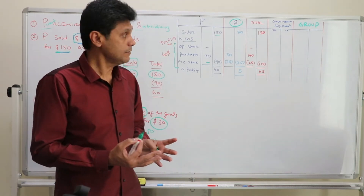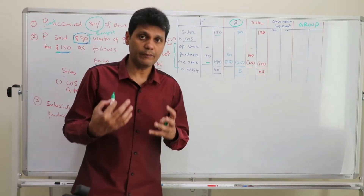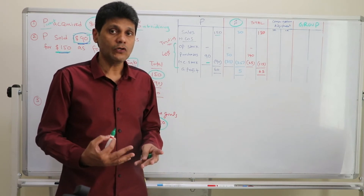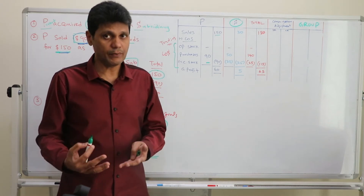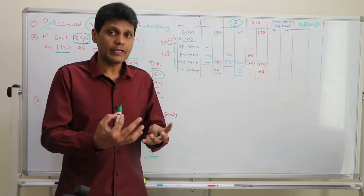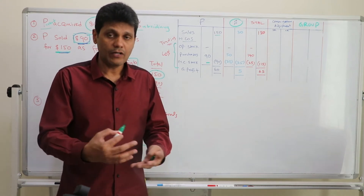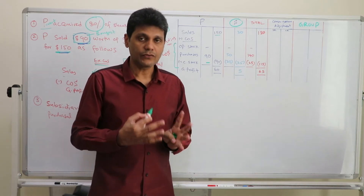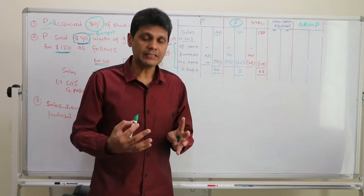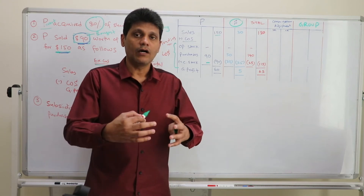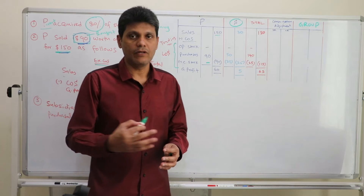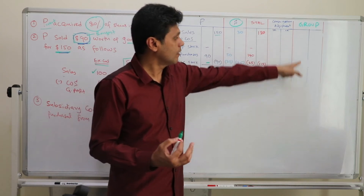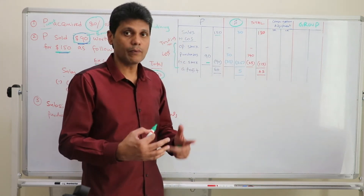However, as far as the group is concerned, as I explained in my previous video, you need to eliminate the intercompany transactions — intercompany sales and intercompany purchases. Also, if there are goods lying in either the parent company's books or subsidiary company's books, whatever profit is included in that stock will have to be eliminated and removed, because the group is considered as a separate legal entity. The group can record only the sales made to external customers; all intra-group transactions must be eliminated.